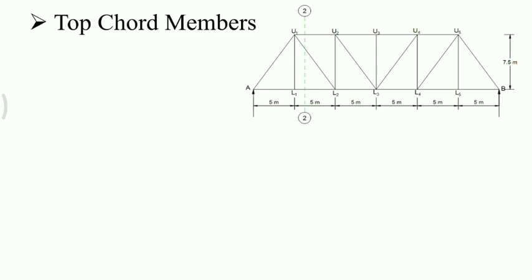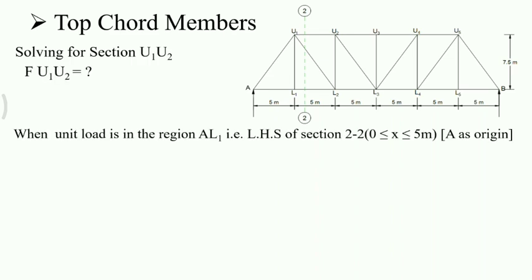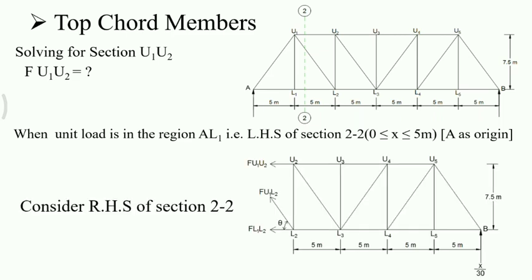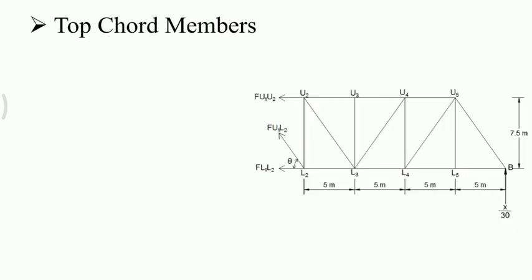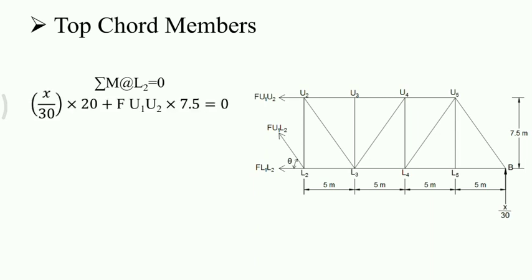We will start with member U1U2. When the unit load is in the region AL1, that is the LHS of section 2-2, the origin is A and the limit is 0 to 5 meters. When the unit load is in this region, we take the right-hand side of the section for calculation. We take the moment at L2. So, X by 30 into 20 plus F of U1U2 into 7.5. Rearranging, we get minus X into 20 divided by 30 into 7.5.